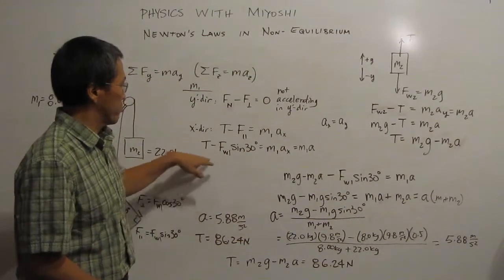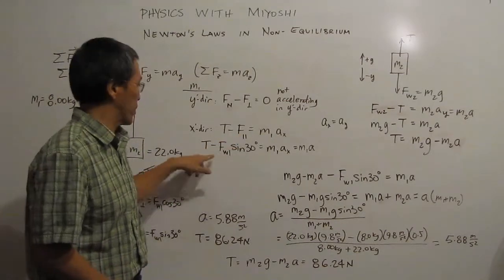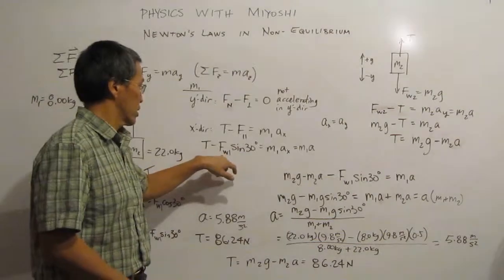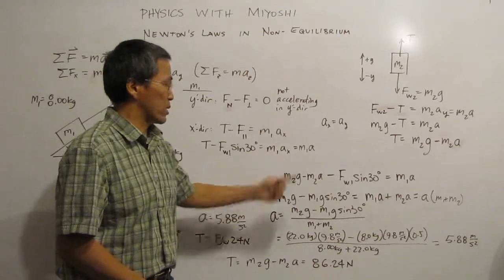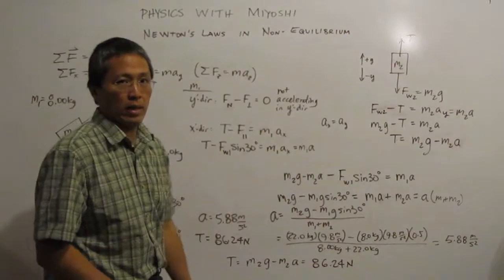Now again, what we're going to do is plug in those guys in there for the substitute. So we have our tension minus the force of weight times sine of 30 is equal to our mass 1 times the ax. Then what we're going to do is, that's about as far as we can go right now.